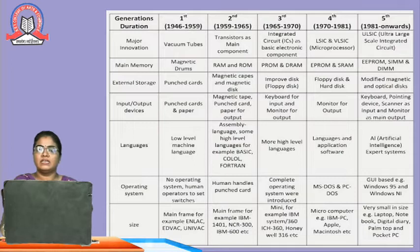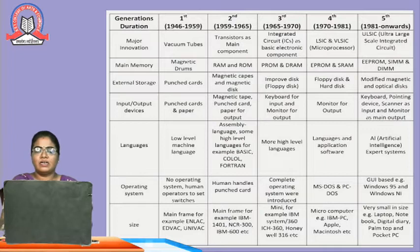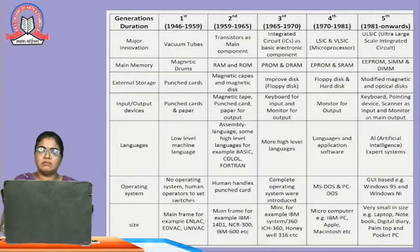In the fifth generation, ultra-large scale integrated circuits were introduced, giving us laptops. EPROM, SIMM, and DIMM were used as main memory. Modified magnetic and optical disk was used as external storage. Keyboard, pointing devices, and scanner were used as input; monitor as main output. Artificial intelligence languages are used, and experts are working towards future AI outputs. The operating system is GUI-based — for example, Windows 95. Size is very small: laptop, notebook, digital diary, palmtop, and pocket PC.